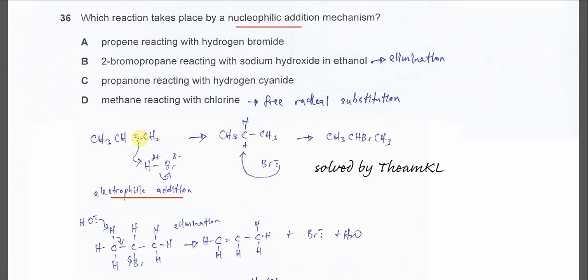And this one, it will donate the electrons to the hydrogen. And the HBr bond will break. And these electrons will move to the bromine and form bromide. After that, bromide will attack the carbocation and form this 2-bromopropane.